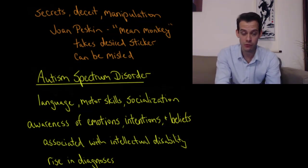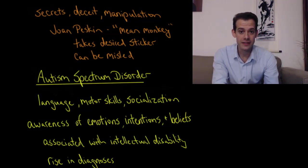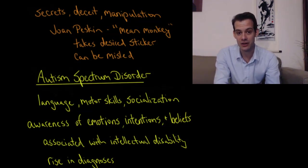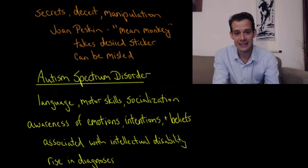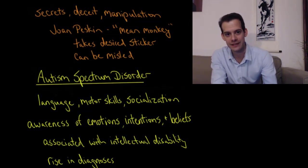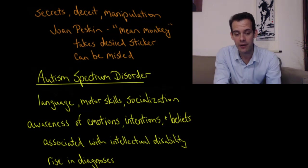This is demonstrated in a study by Joan Peskin involving a puppet of a monkey that she calls the mean monkey. The mean monkey gives the children a choice of two stickers, one of which the child wants and one the child doesn't really want. When the monkey asks the child which sticker do you want, the reason it's called the mean monkey is the mean monkey always takes the sticker that the child wants. Children who are about three years old will repeatedly tell the monkey the sticker that they actually want. The monkey will take it and then give them the ugly sticker that they don't want.